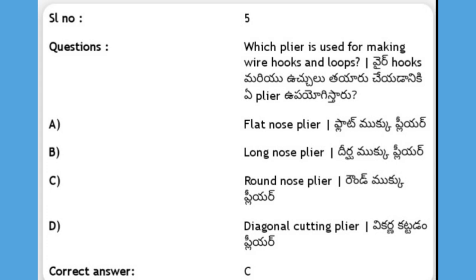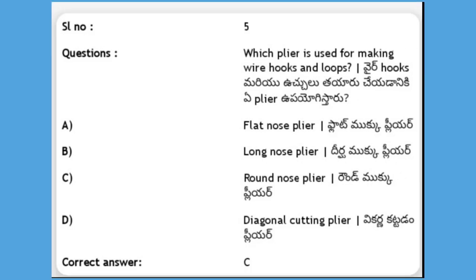Next, which plier is used for making wire hooks and loops? The answer is C, round nose plier.